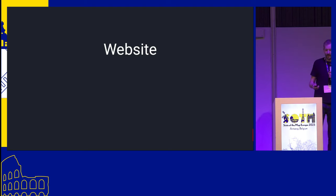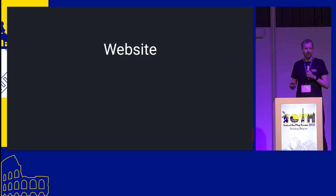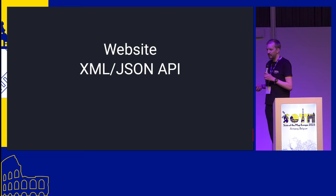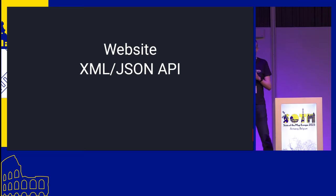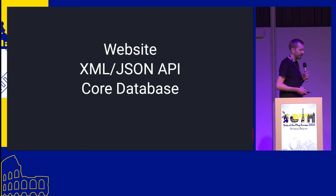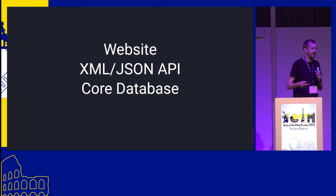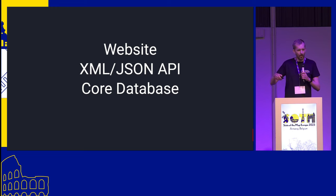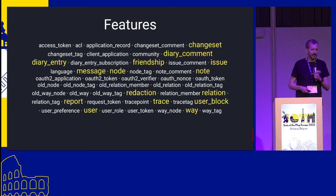The project contains three parts. The first is the code that runs the OpenStreetMap website. It also contains the XML and JSON APIs, which is what your editors use when you press save to add data into OpenStreetMap. The third part controls the core database — what features we want to store in OpenStreetMap and how that's all laid out. All three parts are part of the project I'll be talking about today.